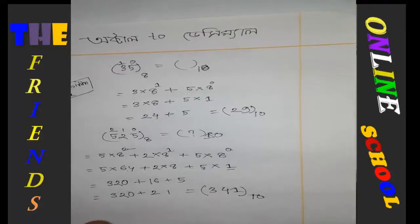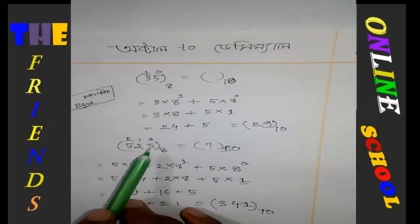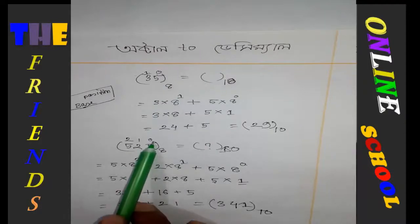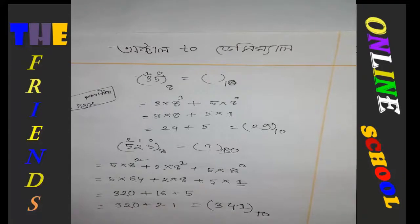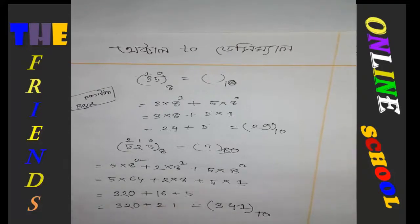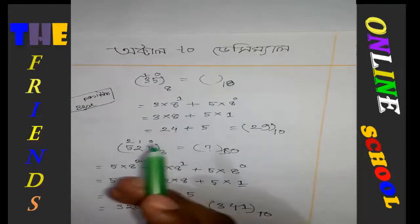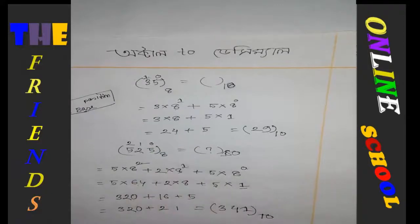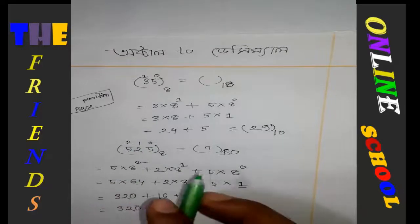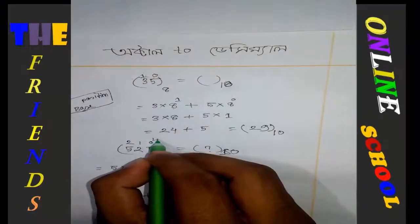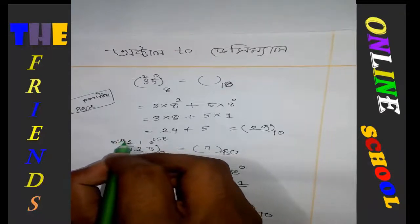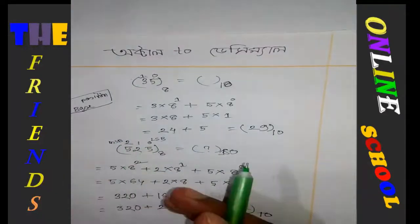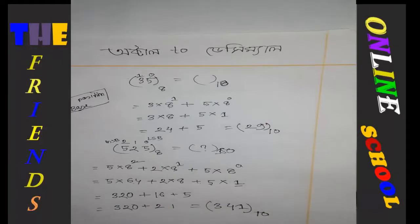Now 1 times 8 to the power 0 equals 1. We get the calculation: 320 plus 16 plus 1 equals 337. When the position is 0, the power is 0. As the position increases, the power increases.